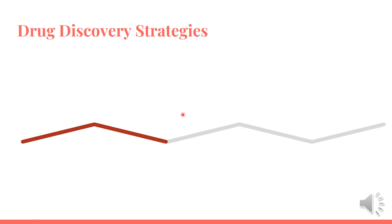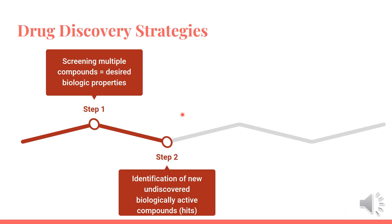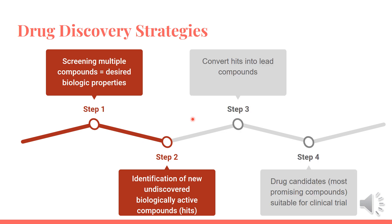The process of drug discovery begins with the identification of new, previously undiscovered biologically active compounds, often called HITs, which are typically found by screening many compounds for the desired biological properties. We will next explore the various approaches used to identify HITs, and to convert these HITs into lead compounds, and subsequently into drug candidates suitable for clinical trials.